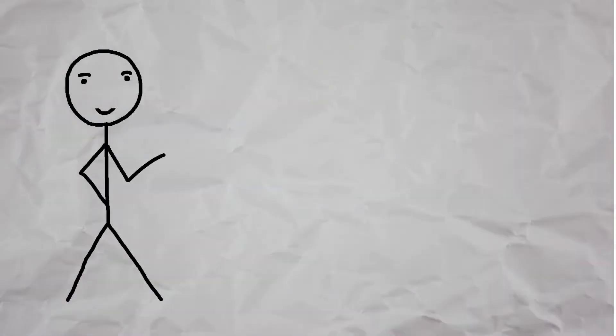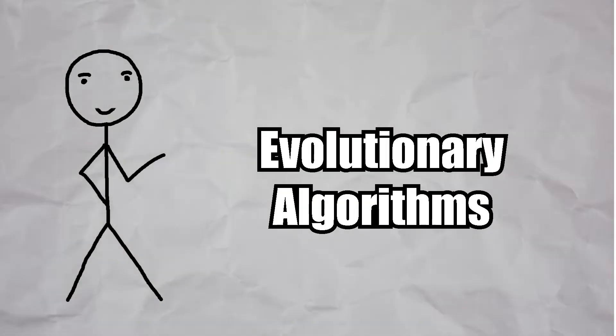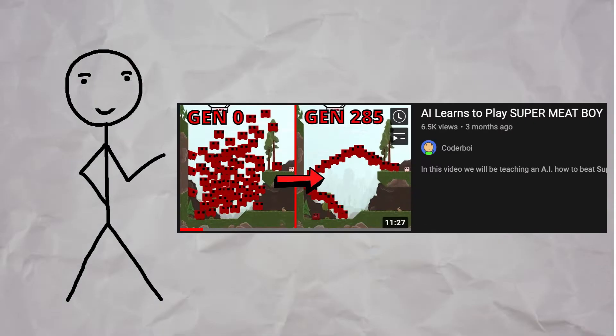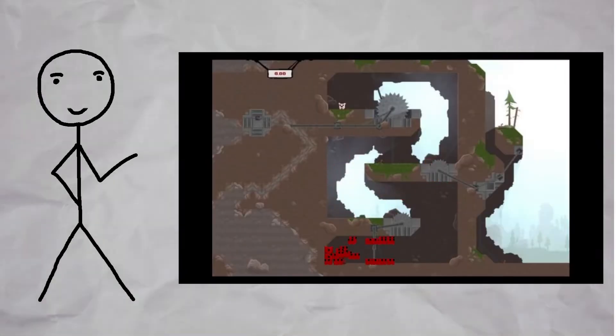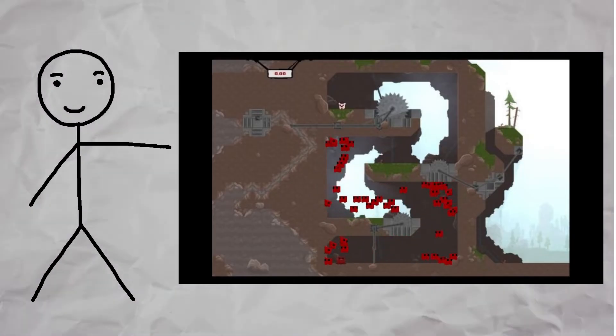The method we will use is called Evolutionary Algorithms. It's what I used in this video where I taught an AI how to beat Super Meat Boy. We basically create a population of 20 runners and throw them into the race track. When they either finish the race or fall down, we take the best 10 and make them have kids and kill the ones that suck. I like to call this the North Korea method of training AI. I chose this method because it was great at training an AI to beat 8 levels of Super Meat Boy.